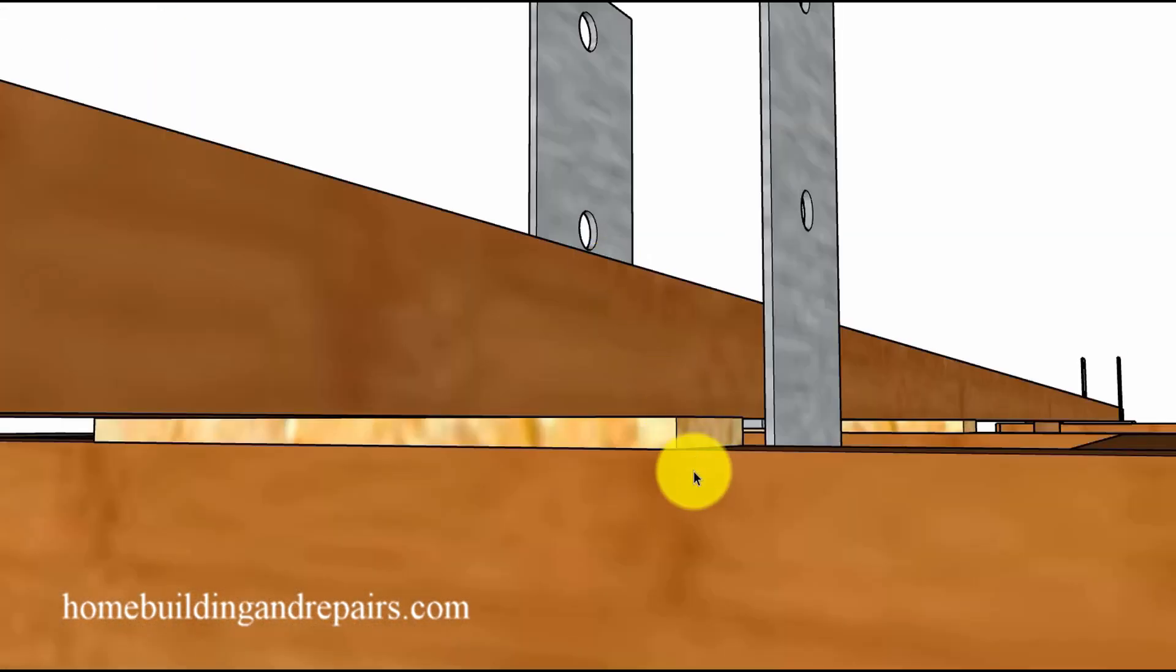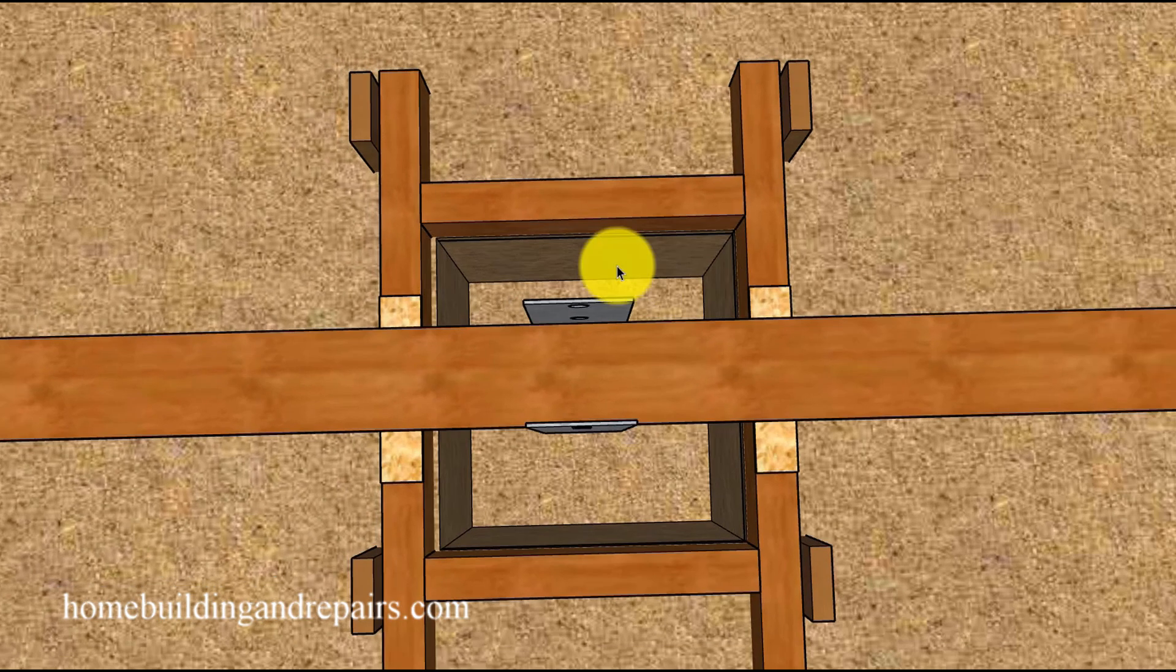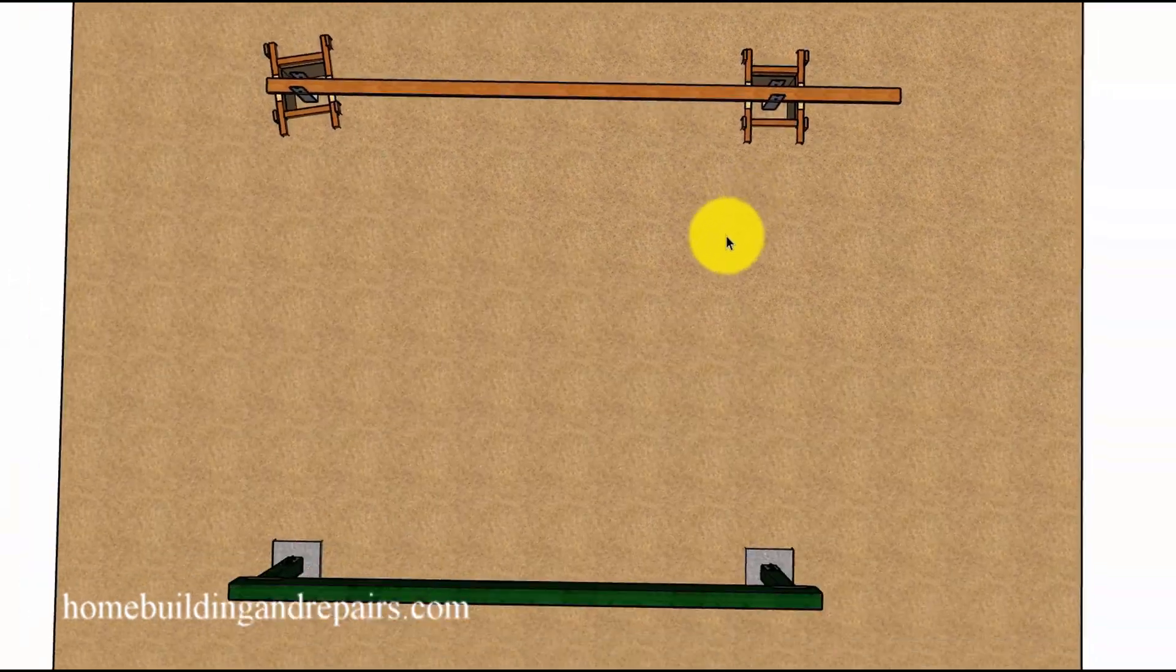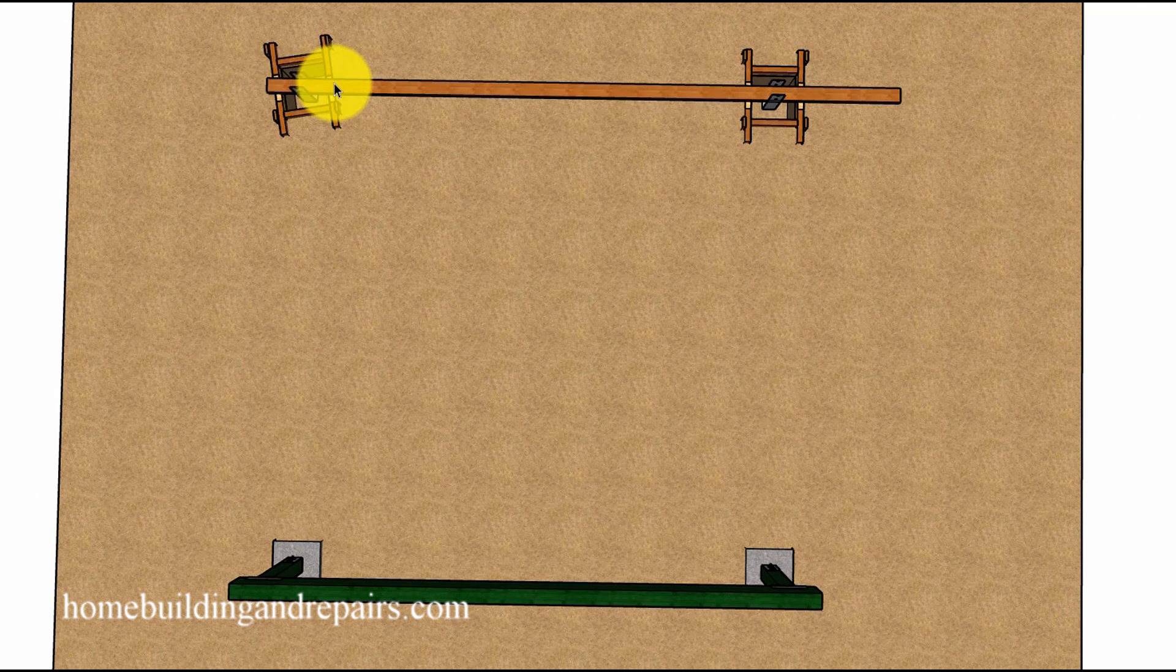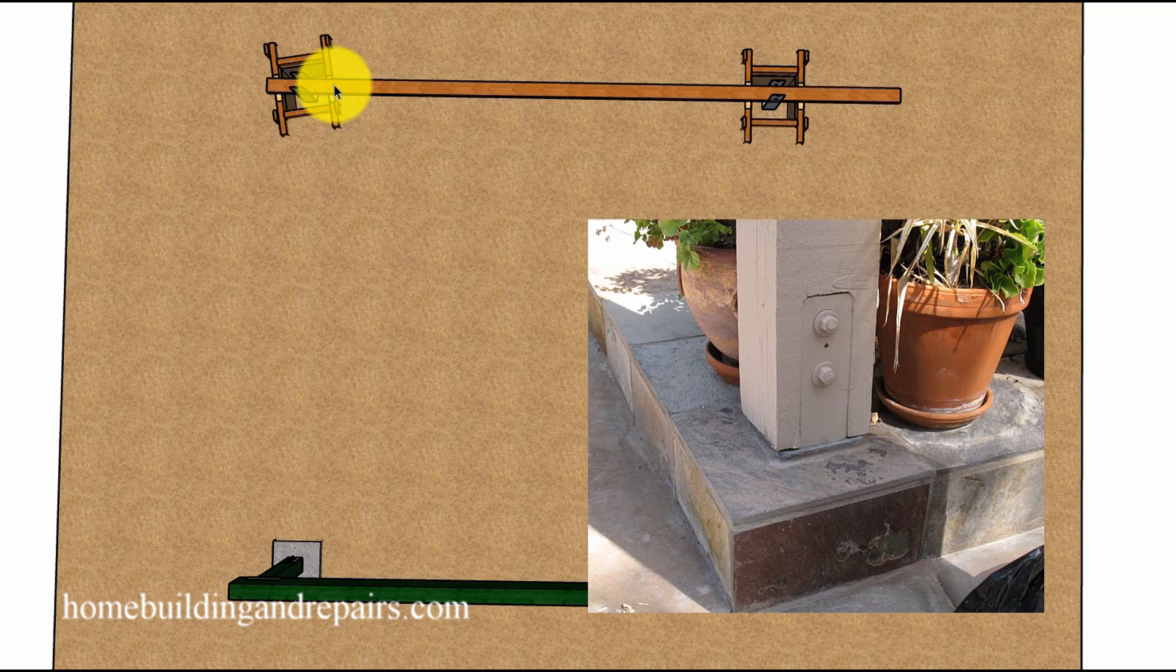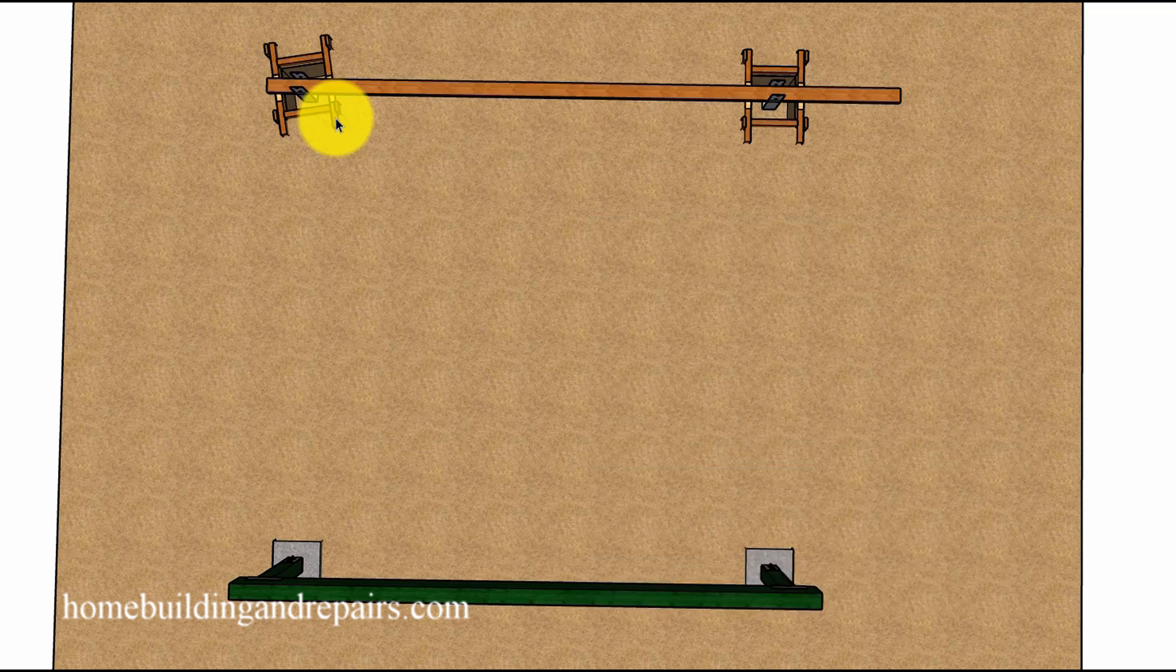Now one more thing I want to point out, and this is something else that I use to raise the post connectors so that the bottom of the post won't rot. That will simply be to slide a few shims underneath the 2x4s on both sides to raise it up enough to where our post won't be sitting in any water, as long as the footings are sticking up above any areas that can accumulate water.